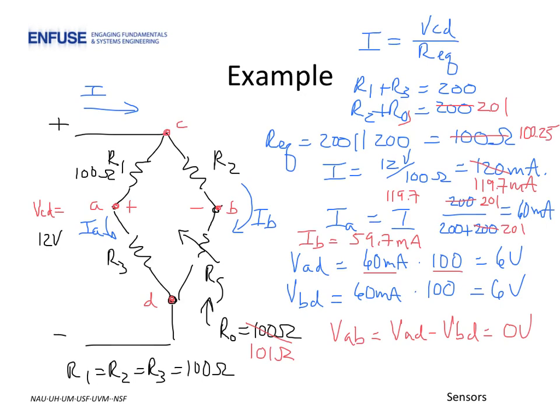But on the right side, things have changed. We have a little less current, now 59.7 milliamps. And our strain gauge is not 100 ohms anymore, but now 101 ohms, resulting in a voltage drop from node B to node D of 6.03 volts. 6.03 volts is not a very large change from 6 volts. In fact, it's only half a percent. But what is key is noting that the difference VAD minus VBD is no longer zero because the bridge is unbalanced, but now equals 30 millivolts.